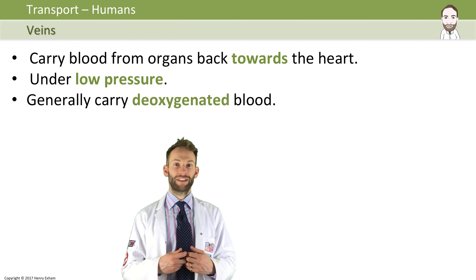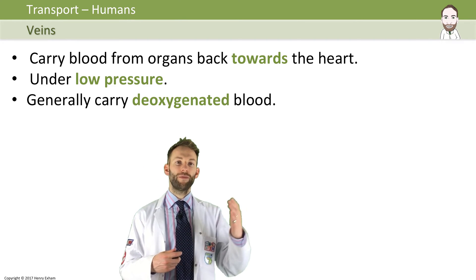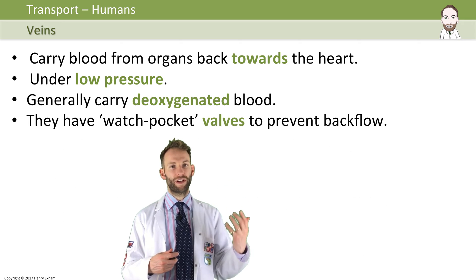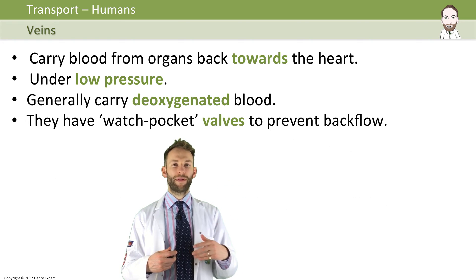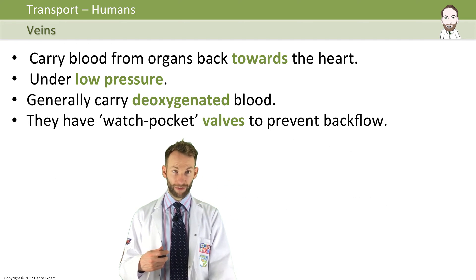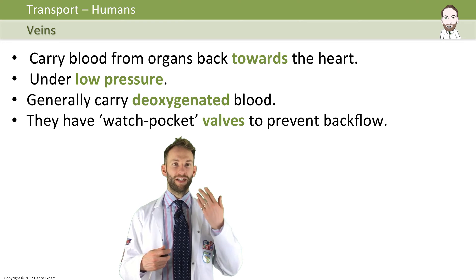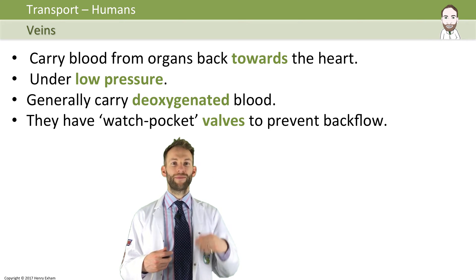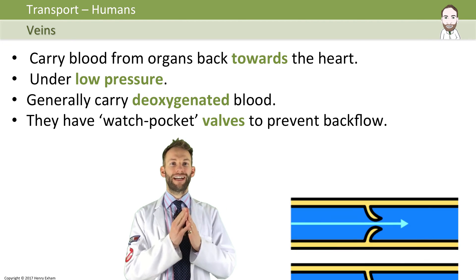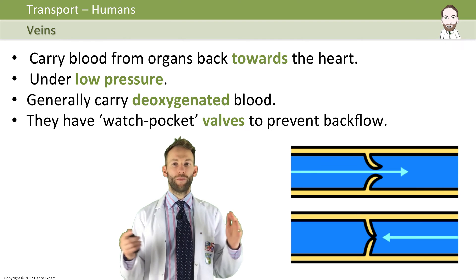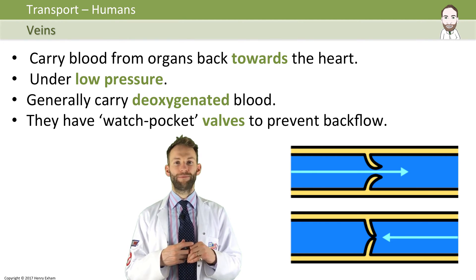Veins tend to carry deoxygenated blood, and to stop the blood flowing backwards — which can happen because the pressure is so low, especially when carrying blood from your feet up your body — you have valves that stop the blood going the wrong way.